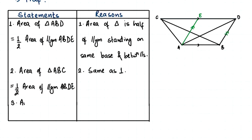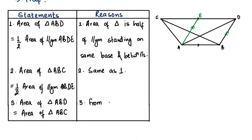From statements 1 and 2, area of triangle ABD equals area of triangle ABC. Our reason: from statements 1 and 2. Proved — we have proved our theorem that two triangles standing on the same base between the same parallel lines are equal in area. If you found this video helpful, give us a thumbs up and subscribe to our channel for future maths videos. Thank you.